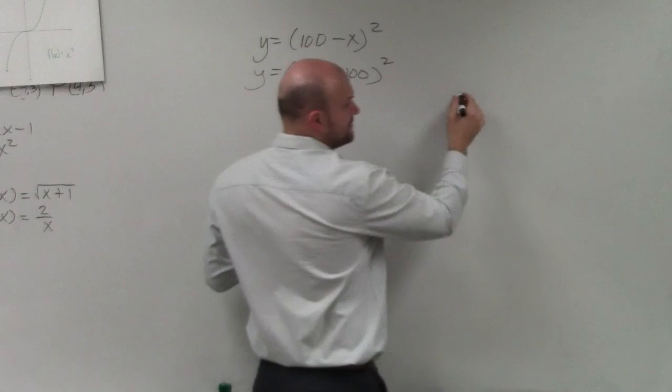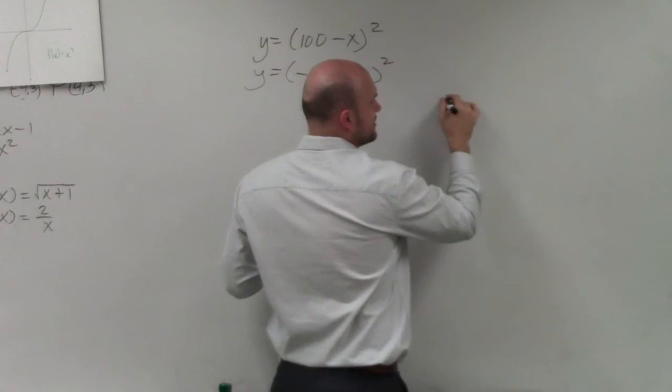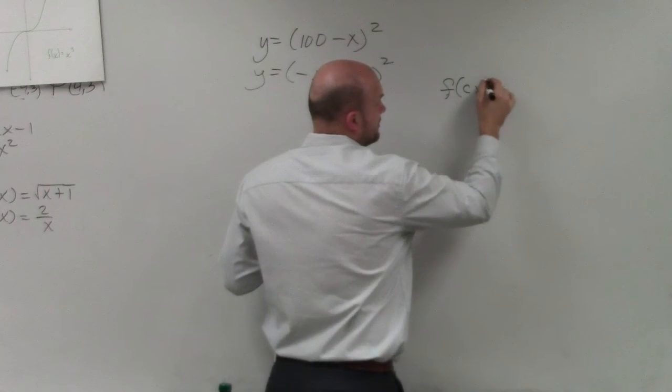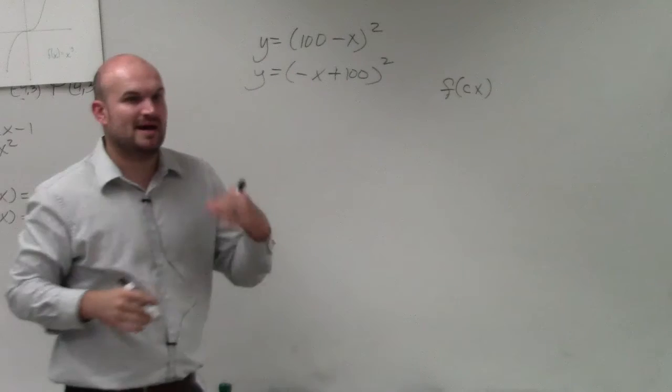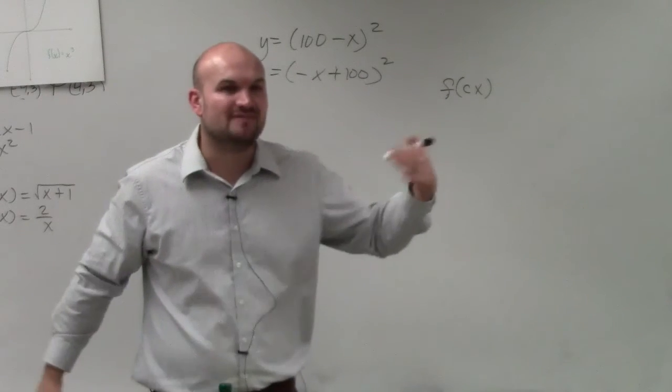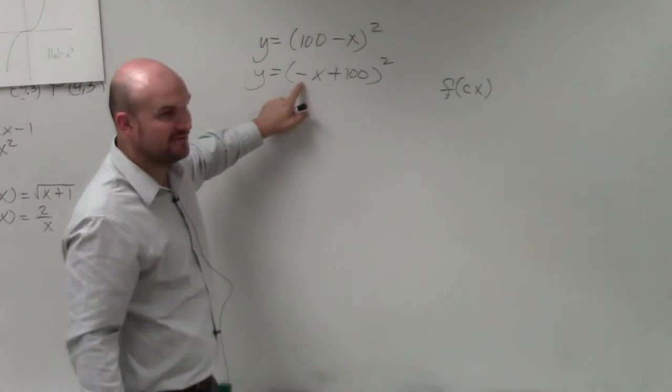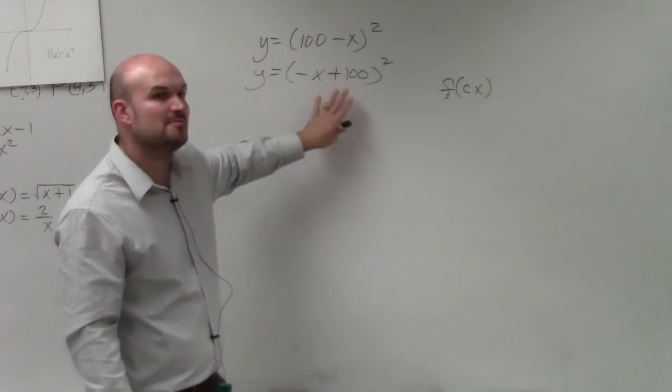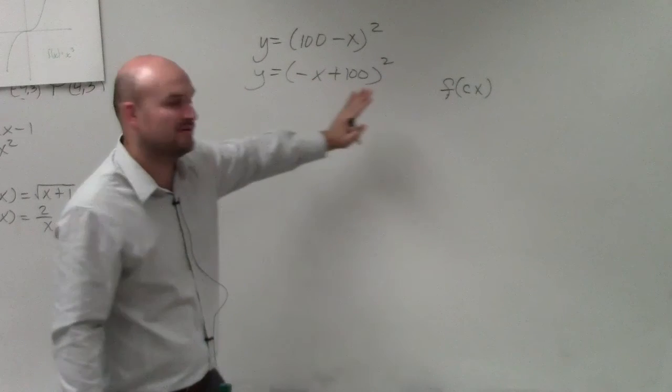Now, here's where it kind of gets a little confusing, which I want you guys to understand. We talked about a transformation or a reflection when c was being multiplied by x, all of x. Right now, this negative is being multiplied by the x, but it's not being multiplied by the 100. It needs to be multiplied by everything for it to be a reflection.